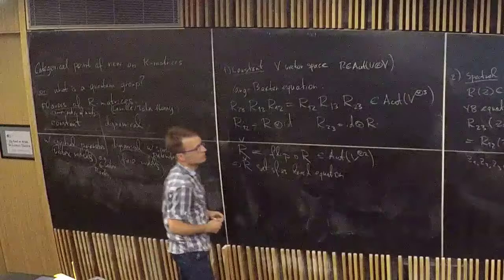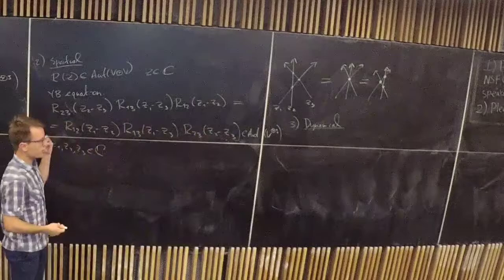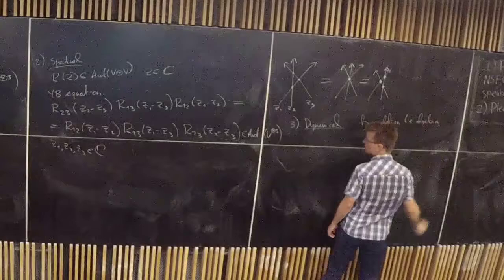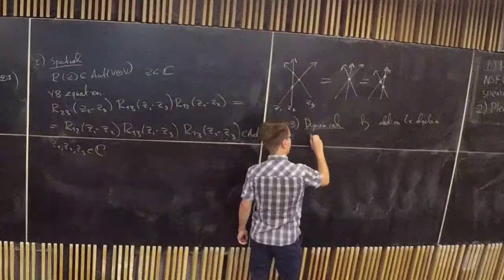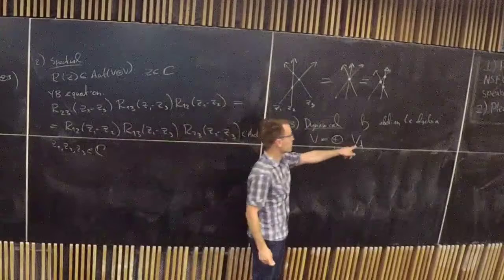The final class of R-matrices are those with a dynamical parameter. Here V is not just a random vector space, but a representation of an abelian Lie algebra H — say H is an abelian Lie algebra. Then V is a representation of H, so you can decompose it according to weights: V equals the direct sum of V_λ.